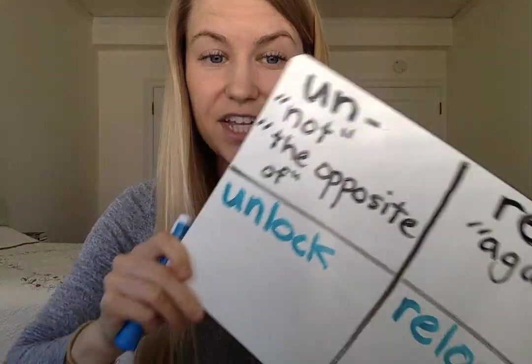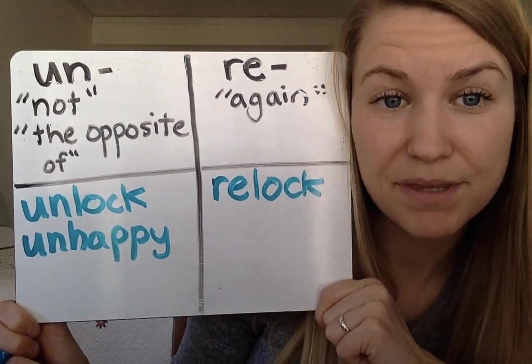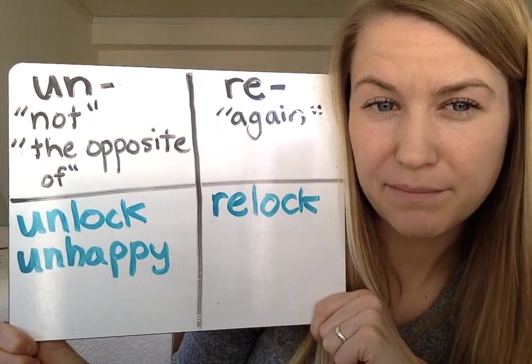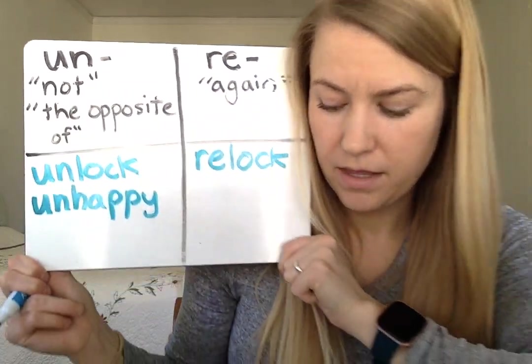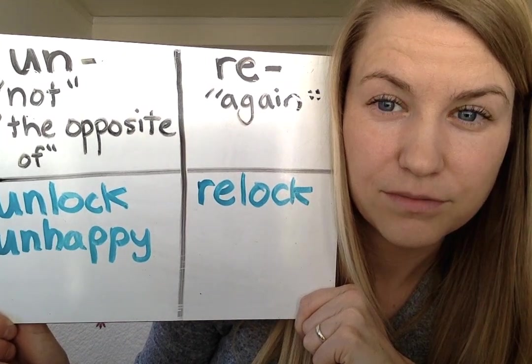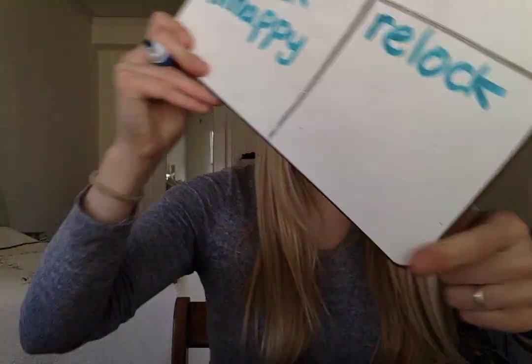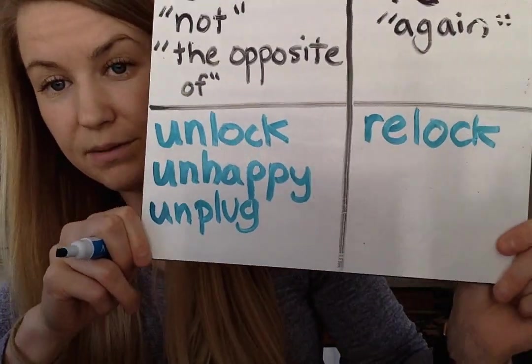How about the word 'unhappy'? Unhappy. Which prefix do you hear? Hopefully you said 'un.' Un — happy. So that means to be the opposite of happy, or not happy — unhappy. Is 'rehappy' a word? No — it really only works when it's a verb. How about: what if you need to move some electronic device? You might need to unplug it. Unplug — to do the opposite of plugging it, take it out. Unplug.